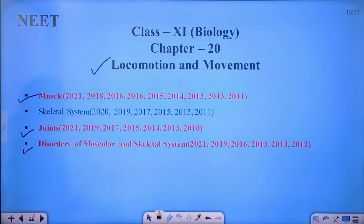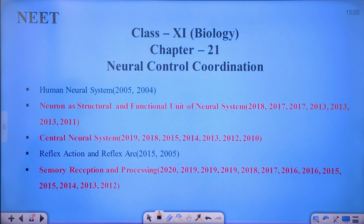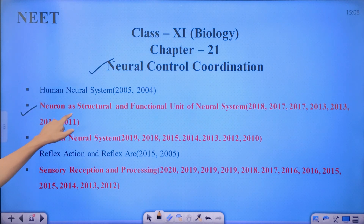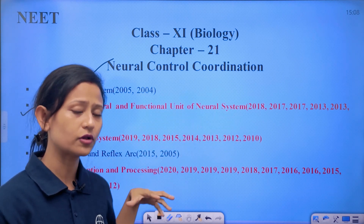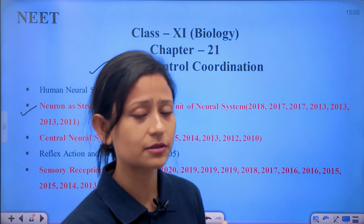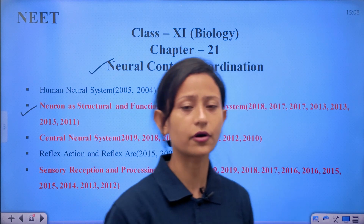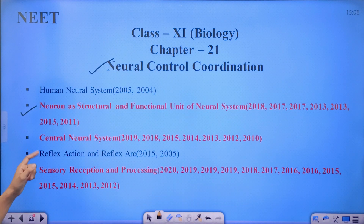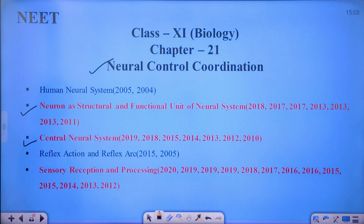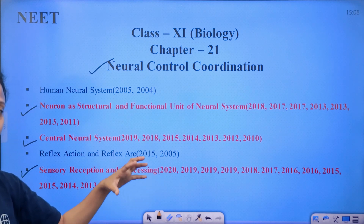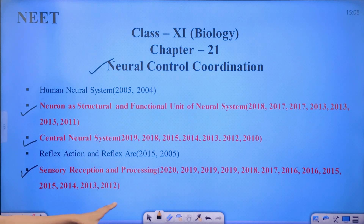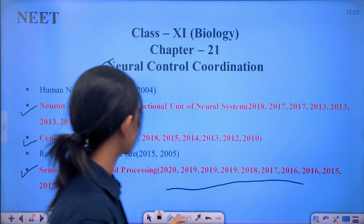Next: Neural Control and Coordination. The important topics are the neuron as the structural and functional unit of the neural system — many questions come from this. The central nervous system, including the brain and spinal cord, is another key topic. Sensory reception and processing is also very important, with many questions from these areas.